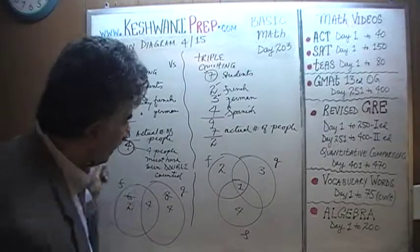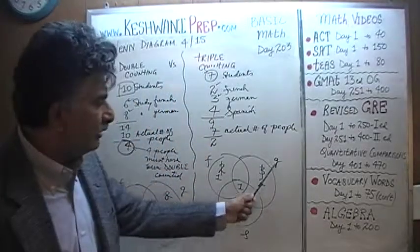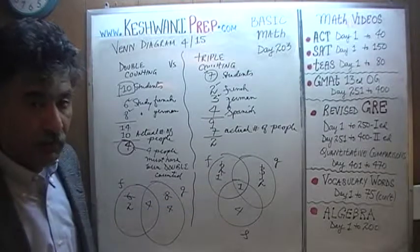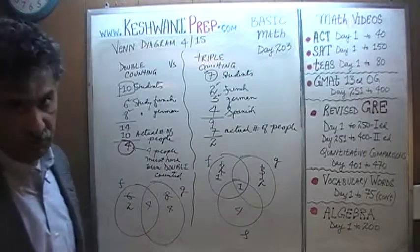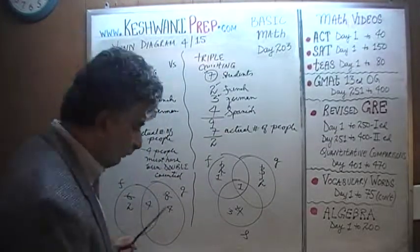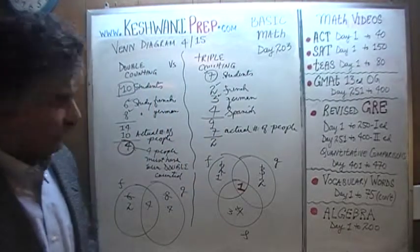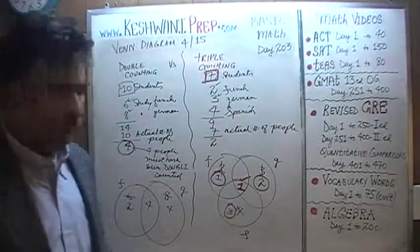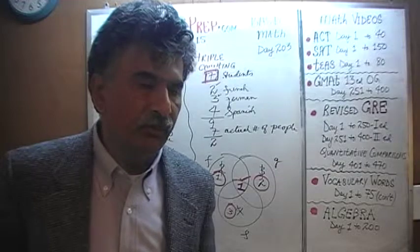As soon as we put a 1 in the center, we subtract 1 from each group. So 1 person studies only French, 2 people study only German, and 3 people study only Spanish. And there is 1 person who studies all 3 languages. Now the figures add up: 1 plus 2 is 3, 3 plus 3 is 6, 6 plus 1 is 7 — exactly what we have. That is the essence, the central idea of the notion of triple counting as opposed to double counting.